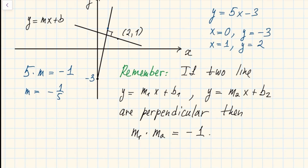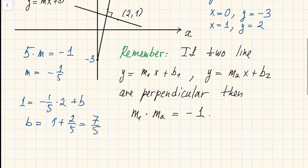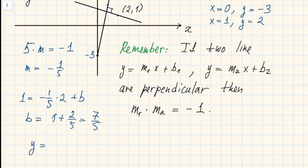We also want the line to pass through the point (2, 1), so we plug in: one equals negative one-fifth times two plus b. Solving, b equals one plus two-fifths, which is seven-fifths. So the answer is y equals negative x over five plus seven-fifths.